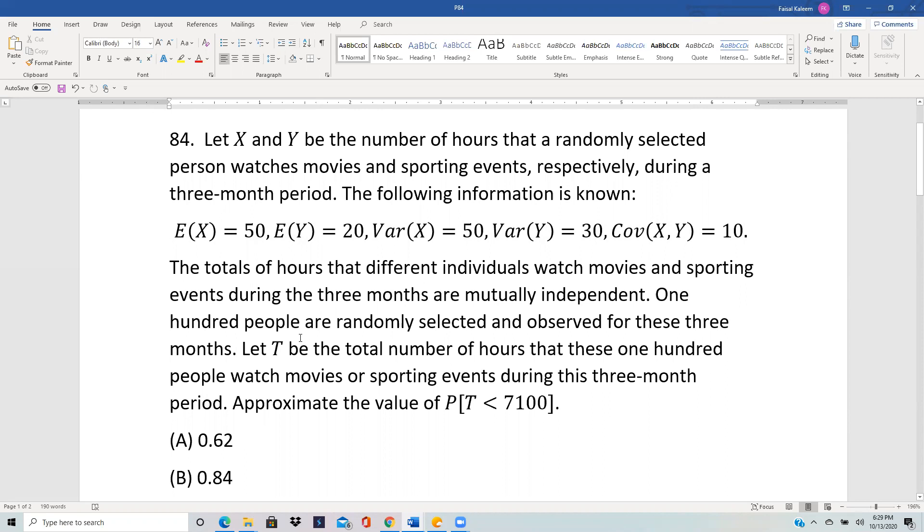Let T be the total number of hours that these 100 people watch movies or sporting events during this three-month period. Approximate the value of probability T is less than 7100.